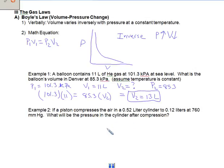Let's take a look at a second example. We have a piston. A piston compresses the air in a 0.52 liter cylinder to 0.12 liters at 760 millimeters of mercury. What will be the pressure in the cylinder after compression? Let's go ahead and do a little drawing here of what we're looking at.